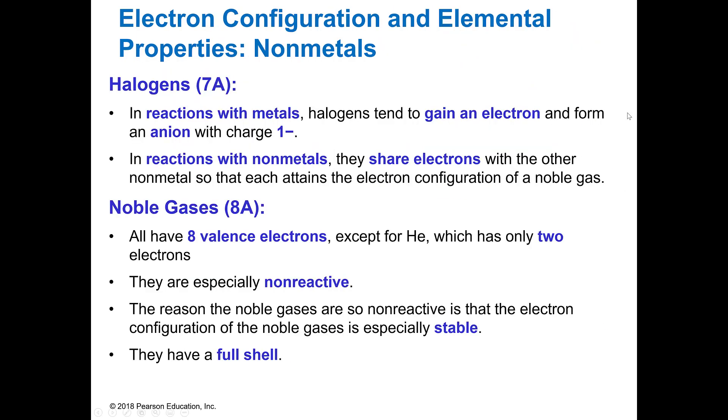The important groups on the right hand side of the periodic table is group 7A which is called the halogens. And as I said they'll form a negative one charge. So you might want to put a negative one over your 7A group.